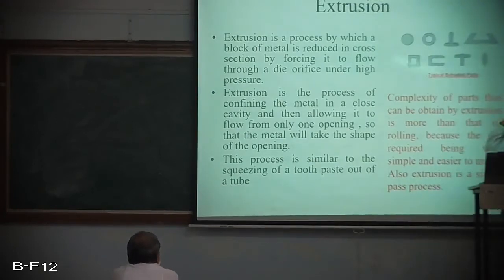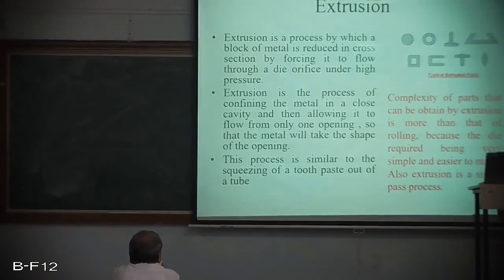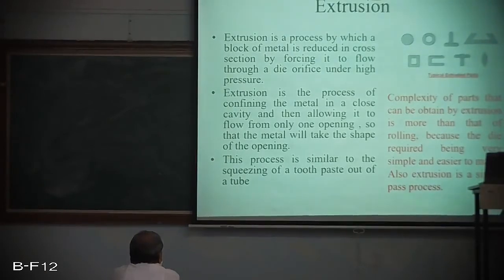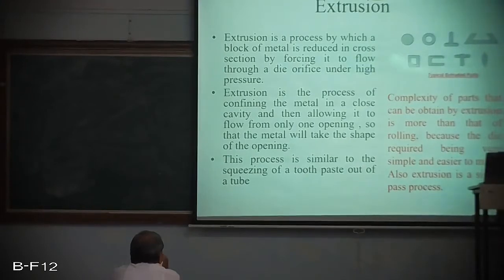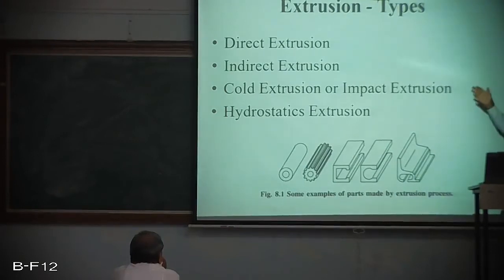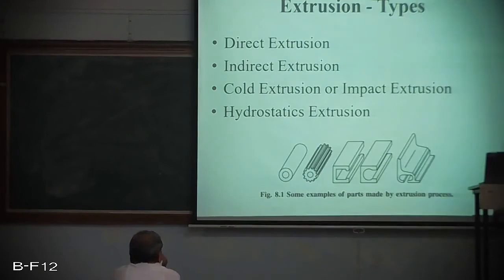A quick review: extrusion is a process by which a block of metal is reduced in cross section by forcing it to flow through a die under high pressure. Keep in mind, extrusion is a single pass process. The different types of extrusion are direct extrusion, indirect extrusion, cold or impact extrusion, and hydrostatic extrusion.